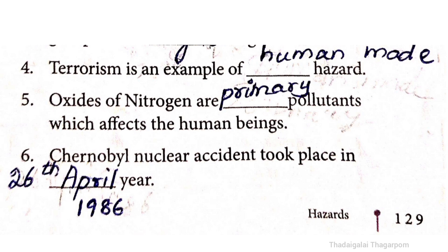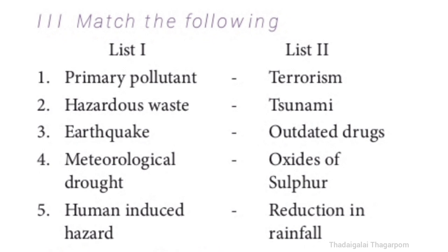Sixth question: The Chernobyl nuclear accident took place in dash year. The answer is 26th April 1986. The Chernobyl nuclear accident took place on 26th April 1986.